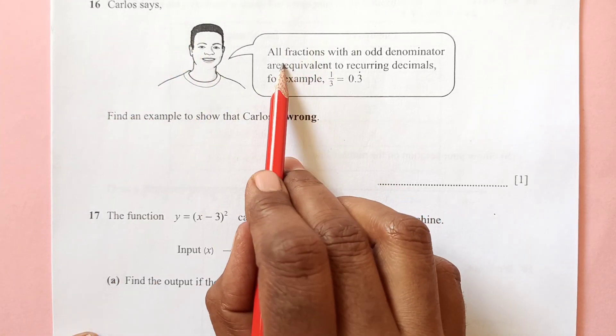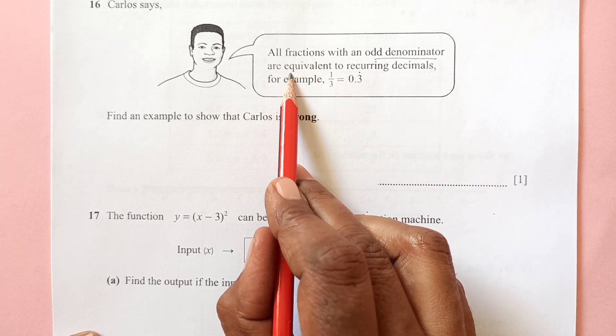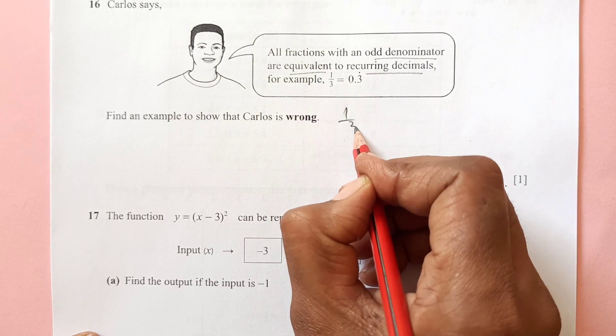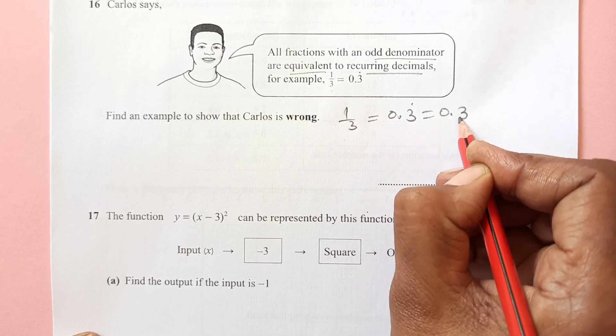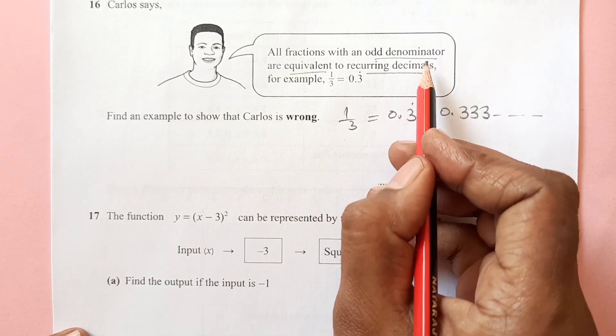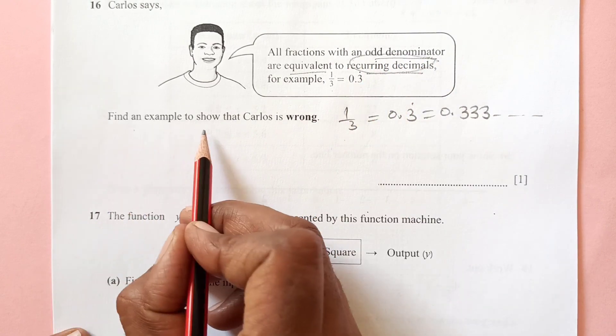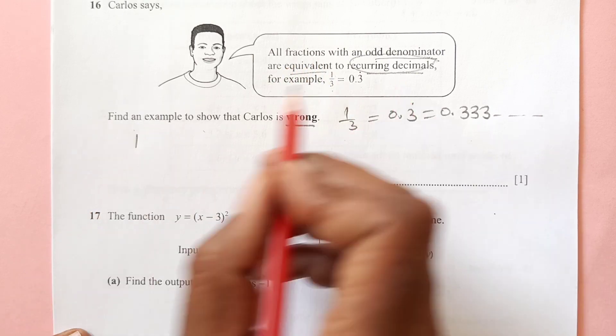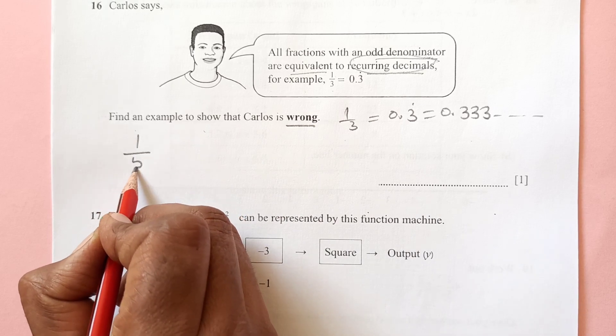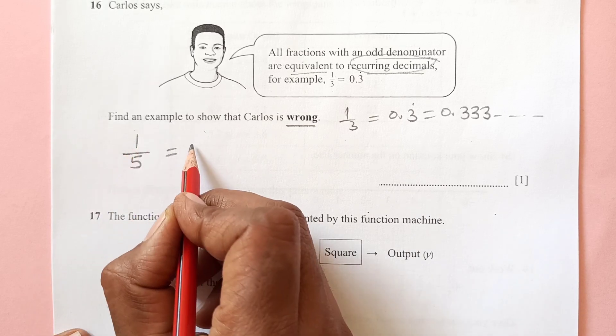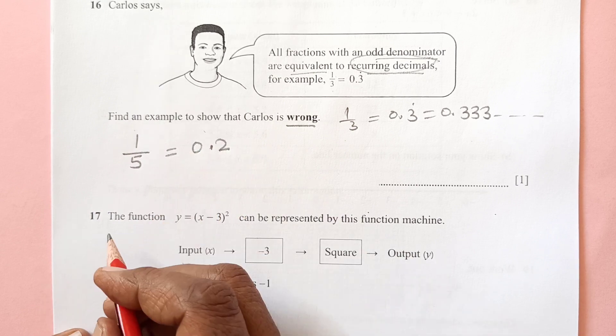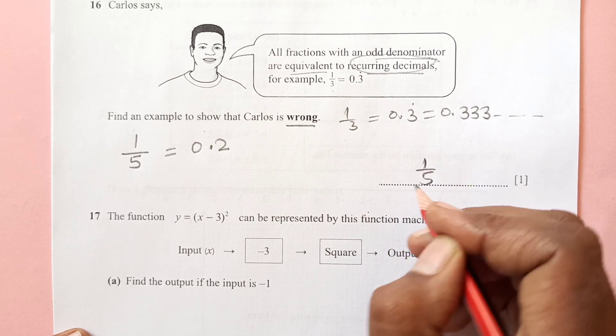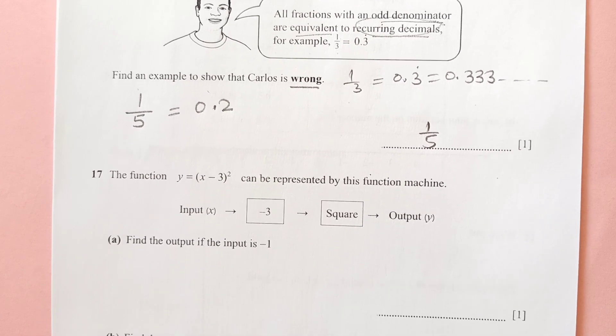Carlos says all fractions with an odd denominator are equivalent to recurring decimals. For example, 1 over 3 is 0.3 dot, meaning 0.333 with 3 repeating - this is a recurring decimal. Find an example to show that Carlos is wrong. So he is wrong. Take a fraction with odd denominator, let's say 1 over 5. When you divide this, you get 0.2, which is not recurring. You just end it. So that means he is not correct. We can write down 1 over 5.